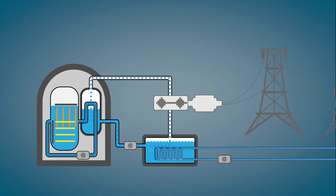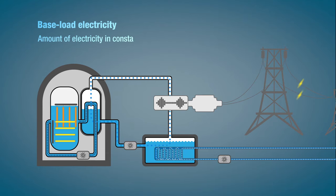Nuclear power stations are generally used to provide what is called baseload electricity. Baseload is the amount of electricity in constant demand 24 hours a day, 365 days a year, and is not subject to variation.